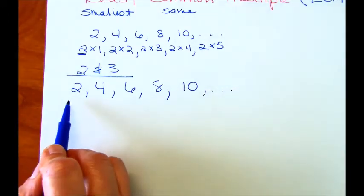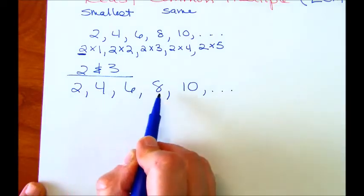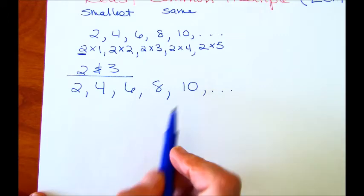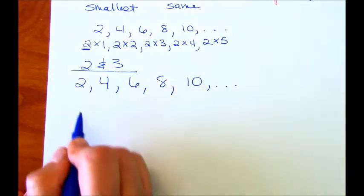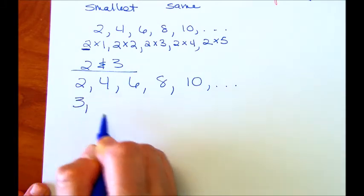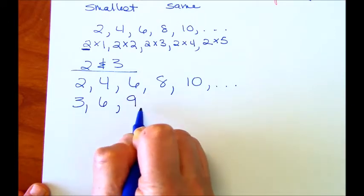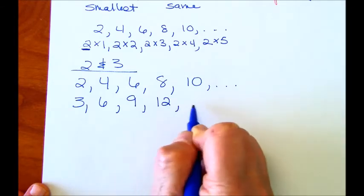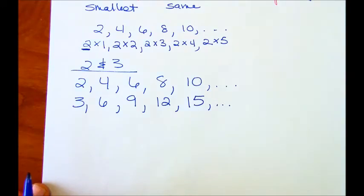Now I can continue, but I'm going to stop at ten. So two times one, two times two, two times three, two times four, two times five. These are all multiples of two. Now let's do the same for three. And again, we're going to start with three times one, which is three. Three times two is six. Three times three is nine. Three times four is 12. And three times five is 15. And again, we could go on, but I'm going to stop there.